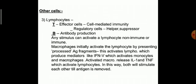Other cells in chronic inflammation include lymphocytes. T-lymphocytes are the effector cells responsible for cell-mediated immunity; there can be helper, suppressor, and regulatory T-lymphocytes. B-lymphocytes are important for antibody production. Macrophages initially activate lymphocytes by presenting processed antigen fragments. These activated lymphocytes produce mediators like interferon-gamma, which activates monocytes and macrophages. Activated macrophages release interleukin-1 and tumor necrosis factor, which in turn activate lymphocytes — both stimulating each other until the antigen is removed.